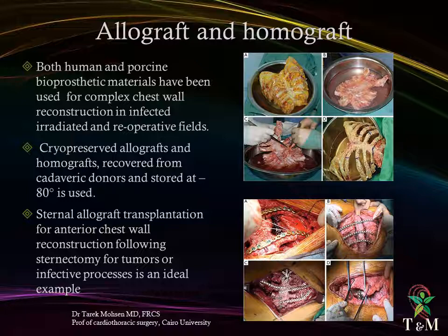Cryopreserved allografts, recovered from cadaveric donors and stored at minus 80 degrees, are being more commonly used to restore structural integrity in large chest wall defects. Sternal allograft transplantation represents an ideal example for anterior chest wall reconstruction following sternectomy for tumors or infective processes. The major advantage is that they are able to incorporate into native tissue with revascularization and cellular repopulation, making them more resistant to infection and useful in contaminated fields.